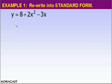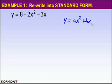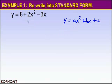In example one, we're going to rewrite this equation in standard form. Please recall that standard form is y equals ax squared plus bx plus c. Now it's pretty obvious that this equation is not in standard form. The first term in standard form is going to be our squared term. In our example, our squared term is 2x squared.